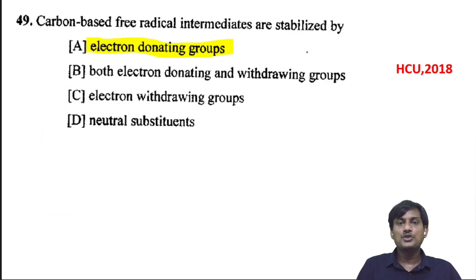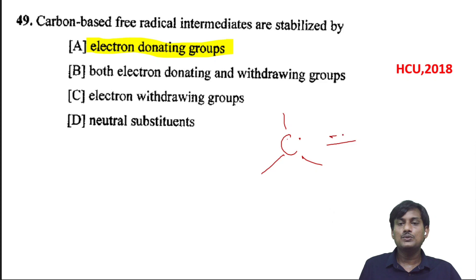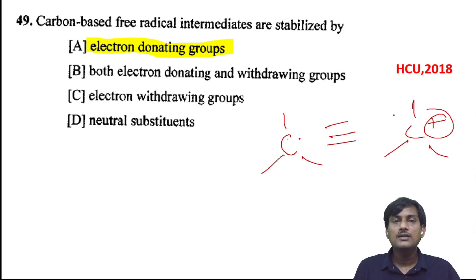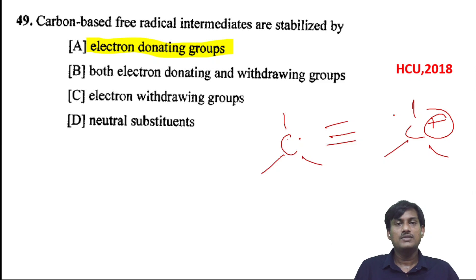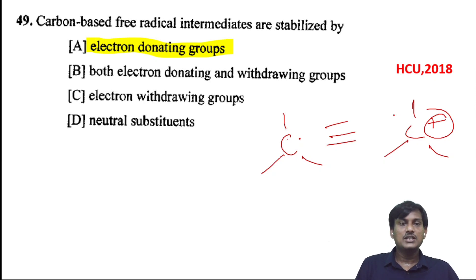Carbon-based free radical intermediates are stabilized by: the carbon-based free radical is an electron deficient species, similar to a carbocation. When comparing the stability of free radicals, you compare with carbocation stability since both are electron deficient. In the case of carbocations, electron donating groups stabilize the intermediates, so electron donating groups can stabilize free radicals as well.